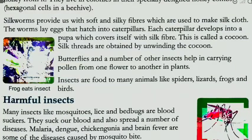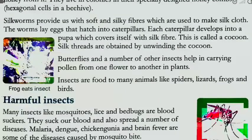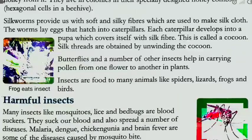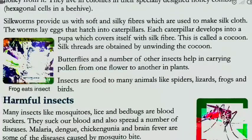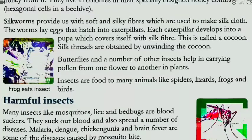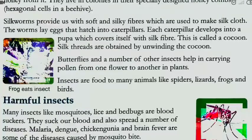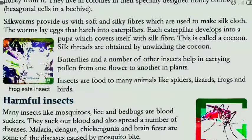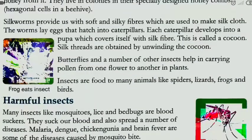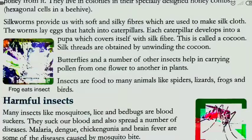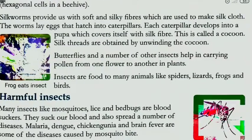Woh cocoon ko ab hum kis tariqe se dhaga silk thread banayenge — jab woh cocoon kuch hawa ke contact mein aata hai, to phir woh sukh kar ke resham ka dhaga, yaani ki silk thread ban jaata hai. Is tariqe se silk worm se silk banta hai. Aur jab woh dhaga ban jaata hai, to kam se kum one thousand meter lamba ek dhaga nikalta hai. Isse tariqe se butterflies aur aise bohot saare insects hote hai.